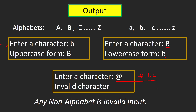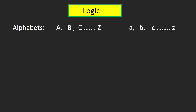Now let's see the logic for this question. As discussed, only alphabets can be in uppercase or lowercase form. Let's say we have a variable 'ch' of type char that stores the input character. Before converting 'ch' into uppercase or lowercase, the first task is to detect whether the character stored in 'ch' is uppercase or lowercase, and then proceed for the conversion.